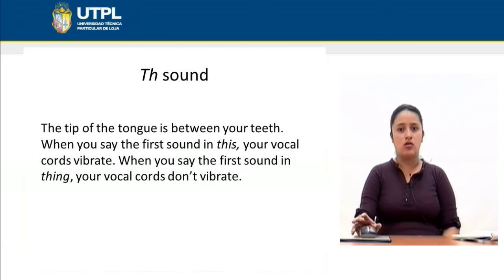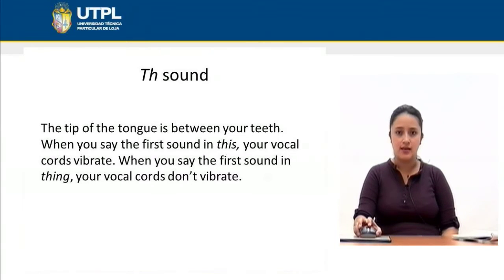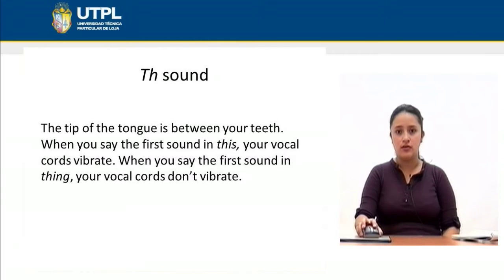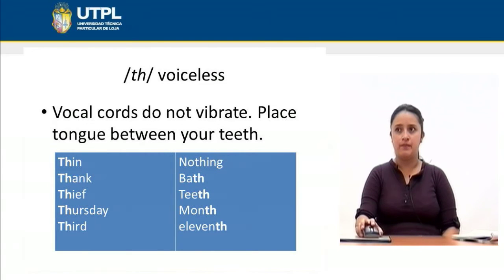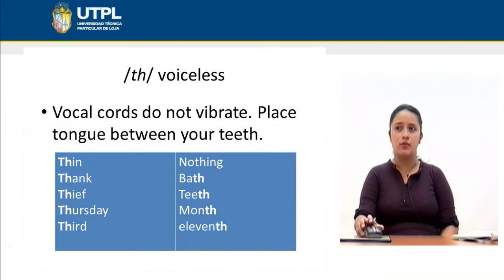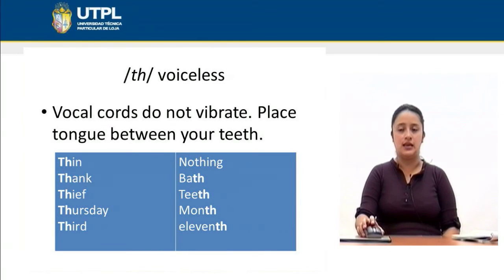In order to contrast the voiceless sound and the voiced sound, the tip of the tongue is placed between your teeth. When you say the first sound in 'these,' your vocal cords vibrate. When you say the first sound in 'theme,' your vocal cords don't vibrate. So there are two 'th' sounds. We are going to notice the difference in the following examples. When the 'th' is voiceless, the vocal cords do not vibrate, and you have to place your tongue between your teeth.